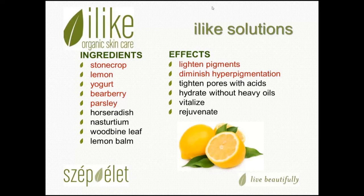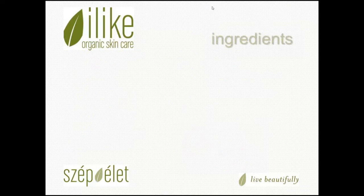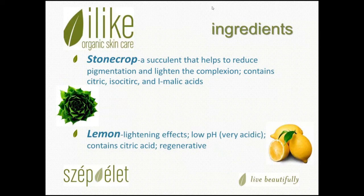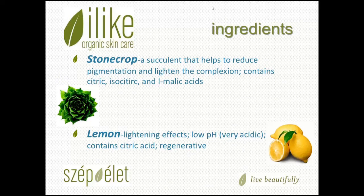The main purpose of this category is to lighten pigmentation and diminish hyperpigmentation while balancing out the hydration level of the skin and helping to rejuvenate. Stone crop is a succulent plant that helps to reduce pigmentation and lighten the complexion. It actually contains citric, isocitric, ascorbic, and L-malic acids. Ascorbic, citric, and isocitric acids are natural antioxidants that lighten dark spots.